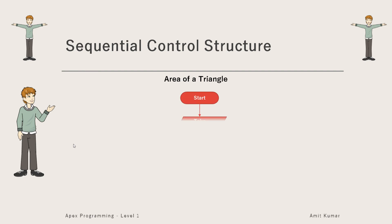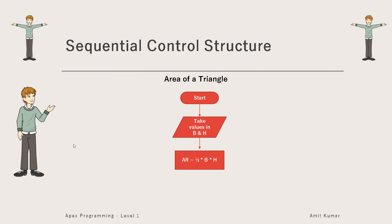To find the area of a triangle, we start by taking values of base and height in variables B and H. We multiply B and H with half and store the result in variable AR, representing area. We show AR and finally stop. That's how we write a sequential control structure flowchart.